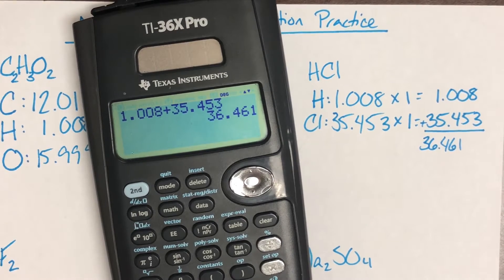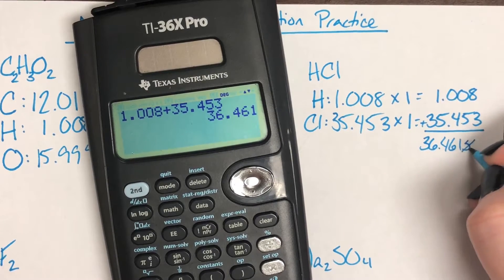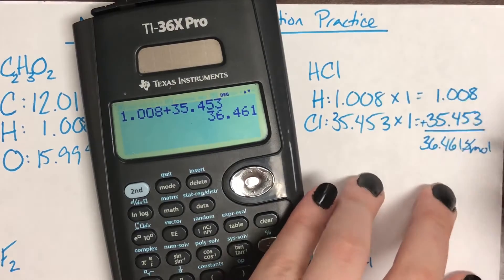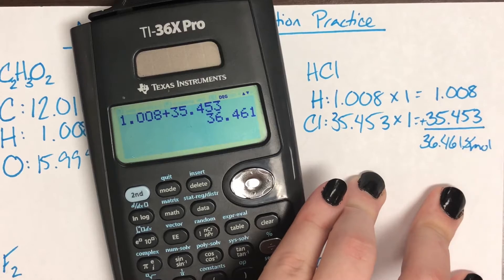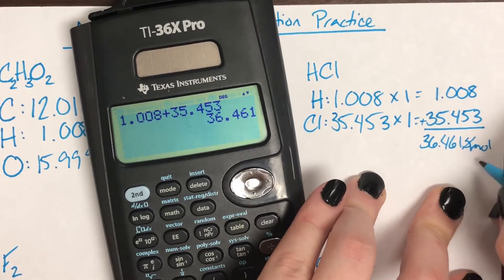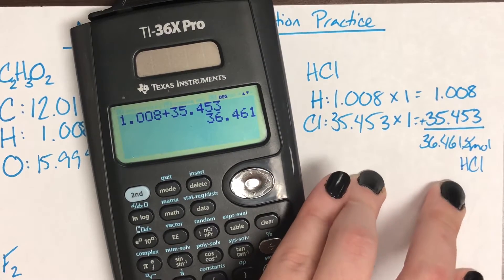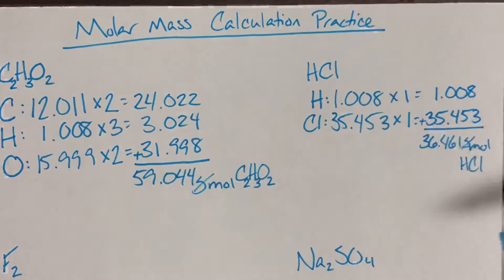Remember that number needs to have a unit — we can't just leave it naked. The unit for molar mass is always grams per mole, and then we list the actual compound it belongs to. I didn't leave myself enough space — normally you would write it off to the side, but I'll put it underneath. Try to keep it in line — that was a mistake on my part.